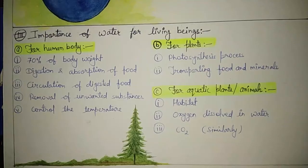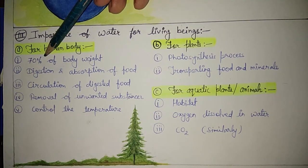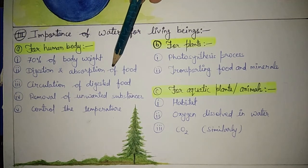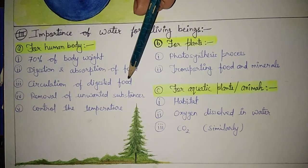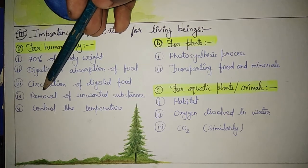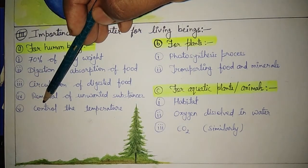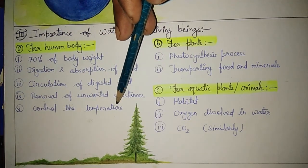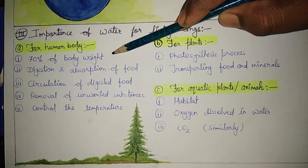Next point: importance of water for living beings. First, for the human body — 70 percent of body weight is only because of water. Because of water, digestion and absorption of food goes well, the circulation of digested food goes well, and the removal of unwanted substances is possible in the form of urine and sweat.